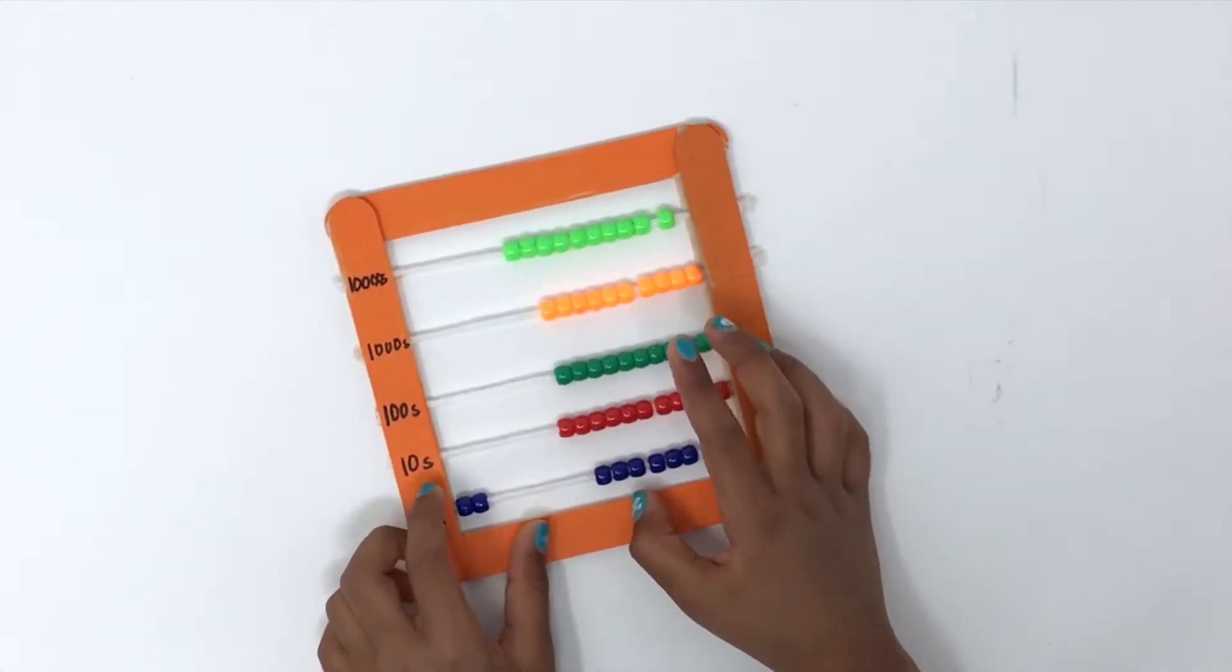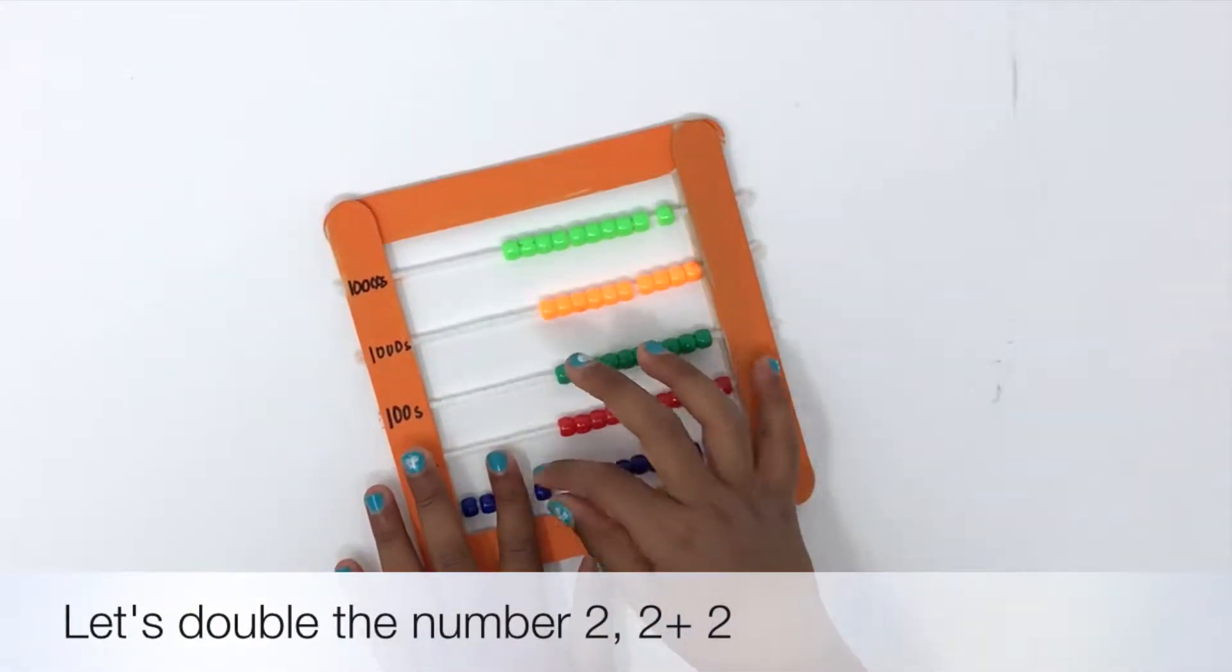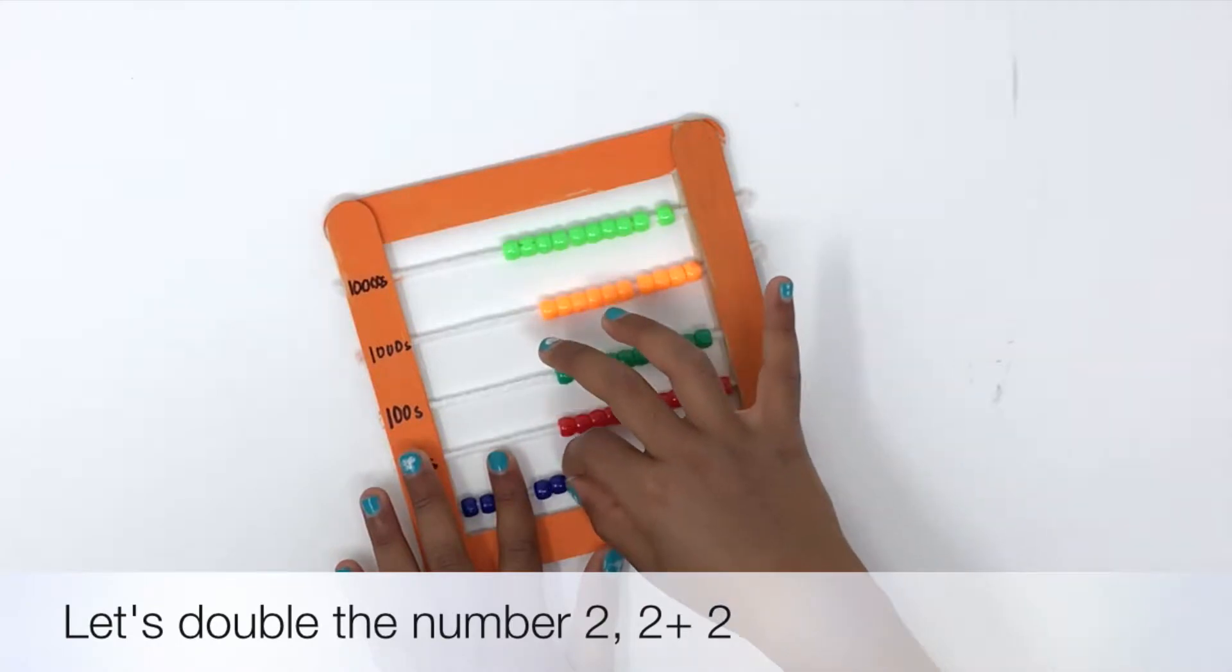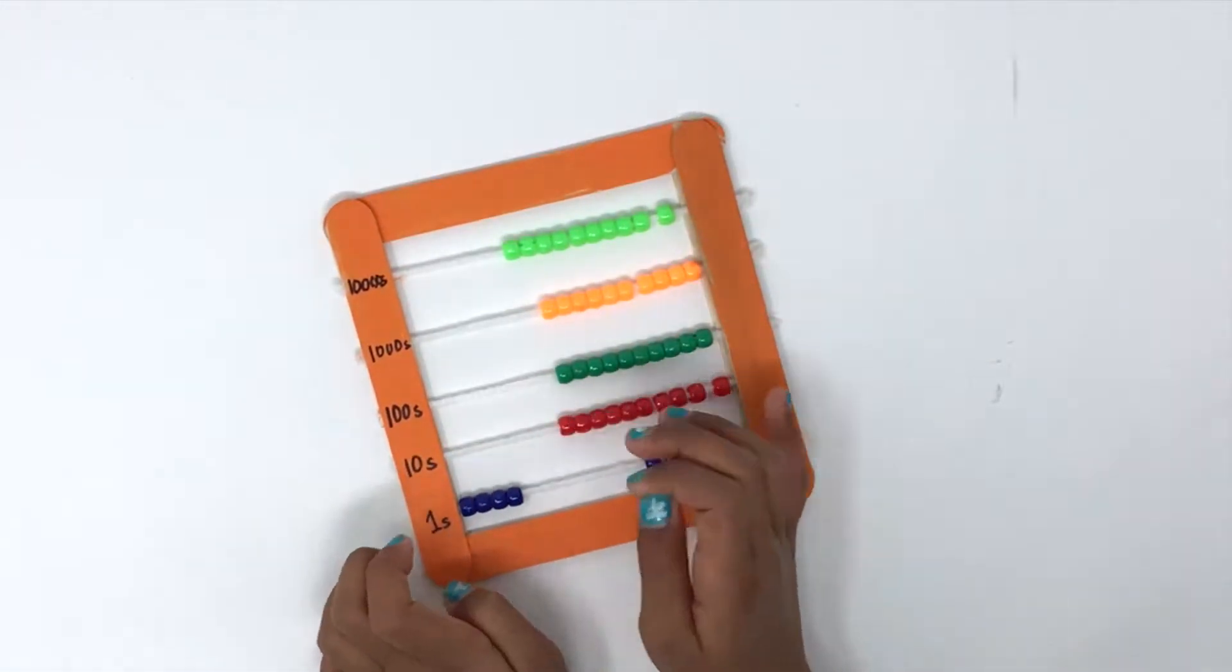Now let's add up 2 and 2. We already have 2. We push 2 more beads to the left. Now push them together. What number did you get?